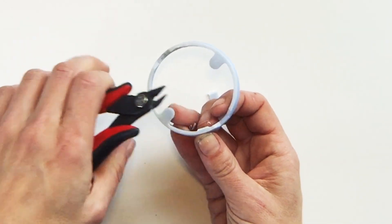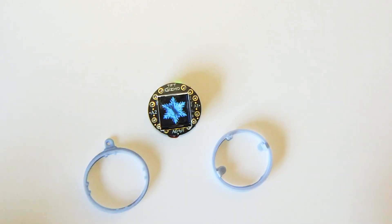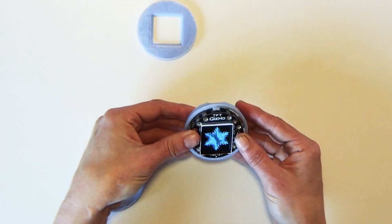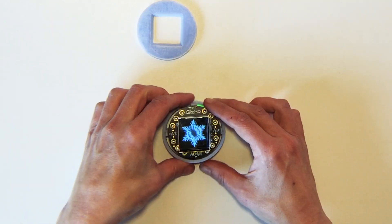Snip off the supports at 1 o'clock and 7 o'clock from the case bottom, as they'll be in our way for this project. Place the electronics into the case, and snap-fit the pieces together.